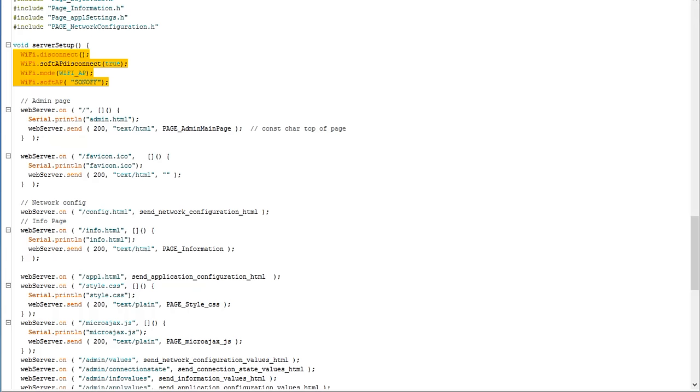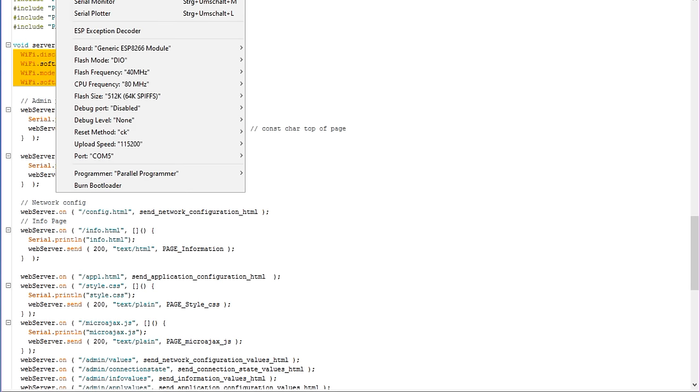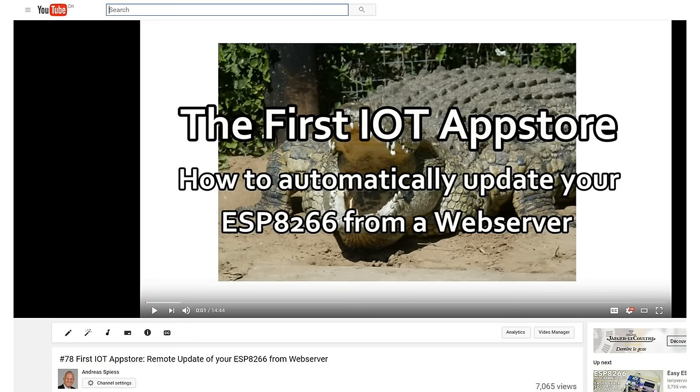In the IDE, we select a generic board with 1MB and the minimum 64 SPIFFS. This allows quite big sketches and also over-the-air programming. Because later, I want to close the Sonoff box and mount it somewhere hidden, I only want to do this programming with the cable once. Afterwards, I do not want to reopen this box again.